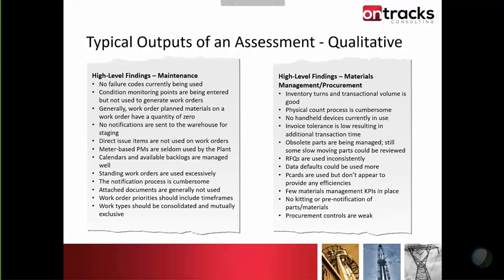The notification process was very cumbersome. They weren't using attached documents. Work order priorities had no time frames, so no one knew the difference between high, medium, and low — is that one day or ten days? They had about 26 different work types, most of which weren't mutually exclusive, making it hard to identify which to select. On the material side, they had very good inventory turns — turning over inventory about three times a year, which was good. But the physical count process took almost a month: printing documentation, going out, writing it all down, no handheld device, then entering it all item by item through the Maximo reconciliation process.